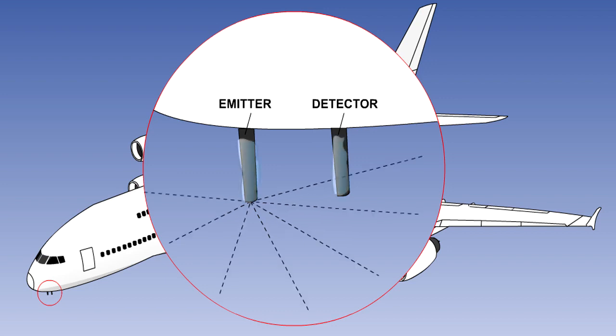Beta particles are absorbed by ice, so that in icing conditions, fewer particles are sensed by the detector. At a certain beta particle count rate, corresponding to approximately 0.4 millimeters of ice, a relay in the detector probe will operate, causing a warning on the flight deck.